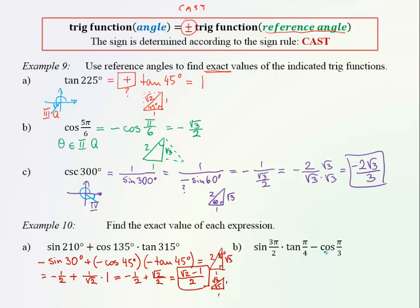The last question is in radians. The first term looks like a quadrantal angle: 3π/2 is exactly at 270 degrees. So sine of 3π/2 is negative 1. Tangent of π/4 — we can use the previous sketch of the special triangle — tangent of π/4 is 1. Minus cosine of π/3: π/3 is like 60 degrees, and cosine is one half. So altogether we have negative 1, negative one half, giving negative 3 halves.